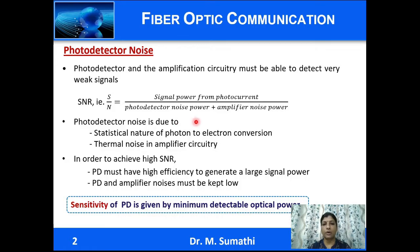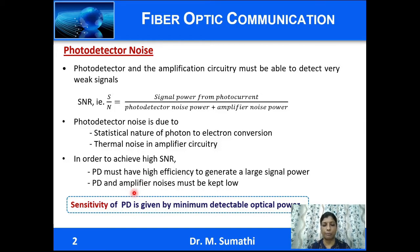The photodetector noise current determines the minimum level of optical power that can be detected. We also have thermal noise associated with the amplifier circuitry. To achieve high signal-to-noise ratio, high signal power from the photocurrent is required, so the photodiode must have high efficiency to generate large signal power and the photodiode and amplifier noises must be kept low.